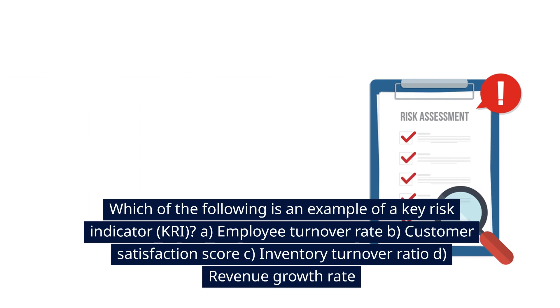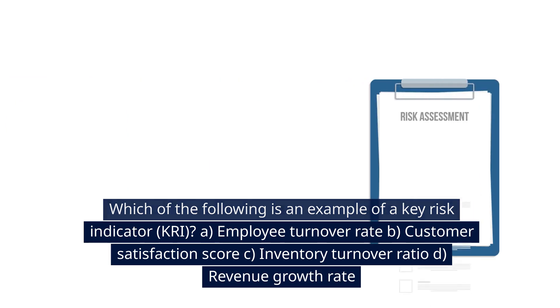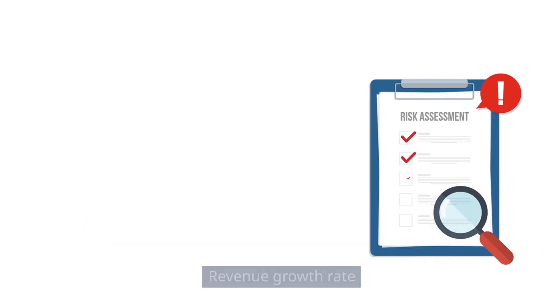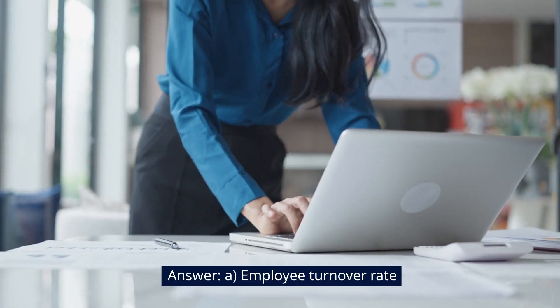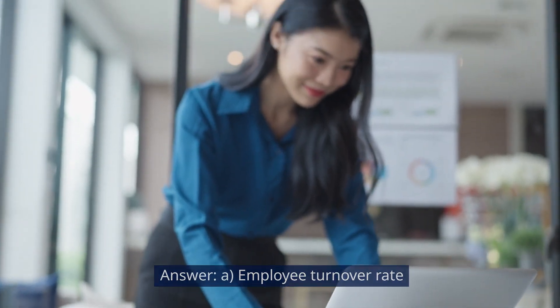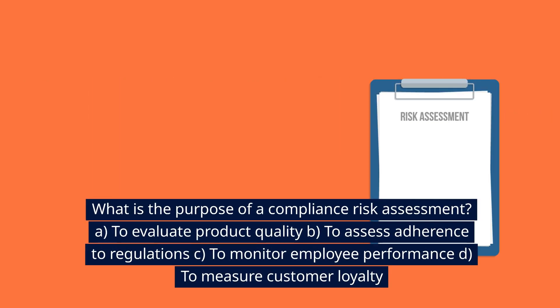Which of the following is an example of a key risk indicator (KRI)? A. Employee turnover rate. B. Customer satisfaction score. C. Inventory turnover ratio. D. Revenue growth rate. Answer: A. Employee turnover rate.